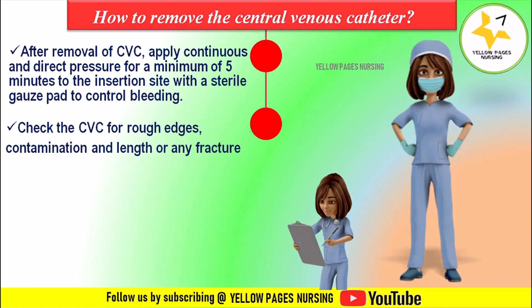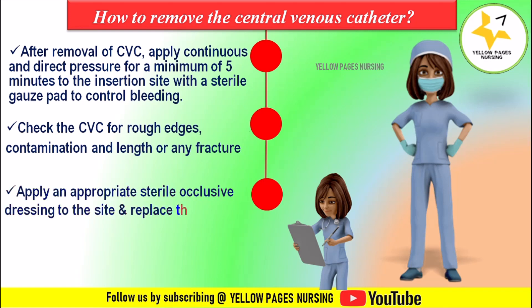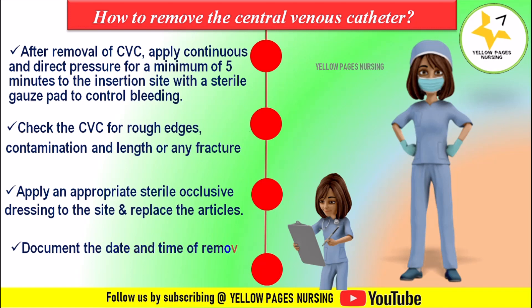If there is an order for catheter tip culture, use sterile scissors to cut at least three centimeters of the tip, place it in a sterile container, seal it, and send it to the microbiology laboratory with a requisition for culture and sensitivity. Apply an appropriate sterile or occlusive dressing to the site, replace the articles, and document the date and time of removal.